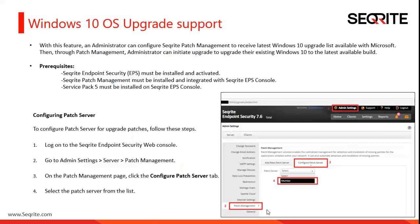The next enhancement is very critical because it will help many organizations to upgrade their Windows 10 to the latest build via the Securite patch management feature. Prerequisites: first, Securite Endpoint Security must be installed and activated. Second, Securite patch management must be installed and integrated with the Securite EPS console. Third, Service Pack 5 must be installed on the Securite EPS console.